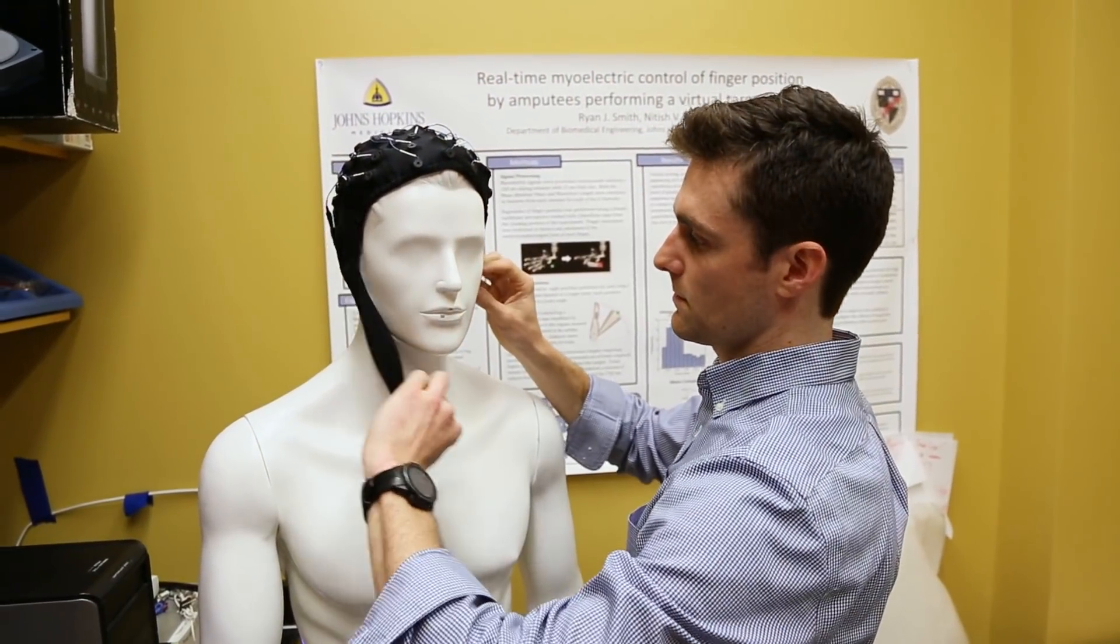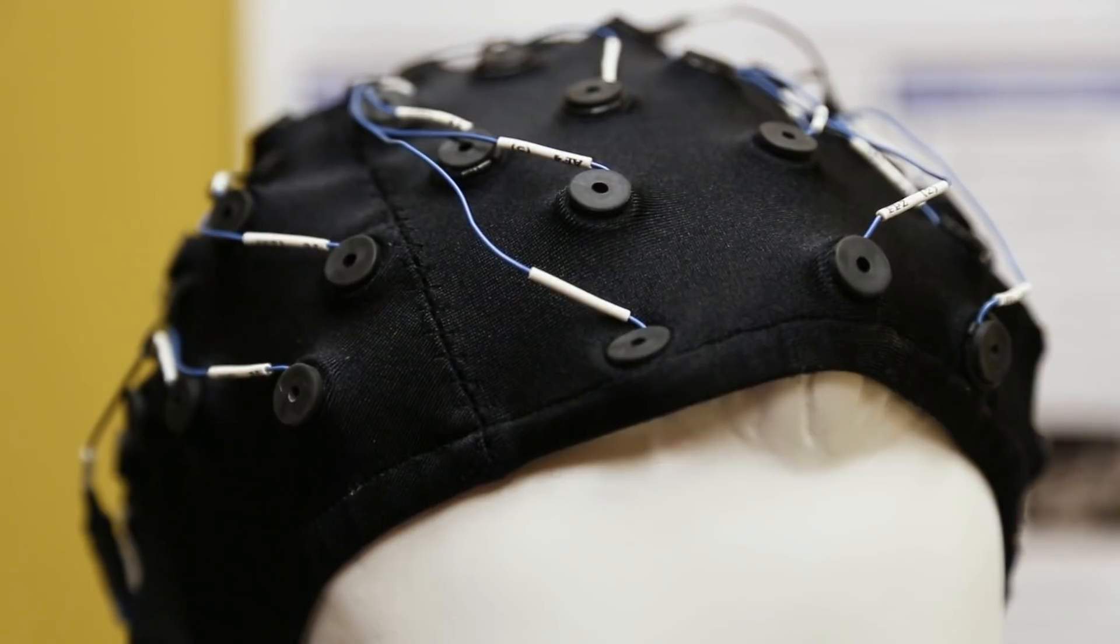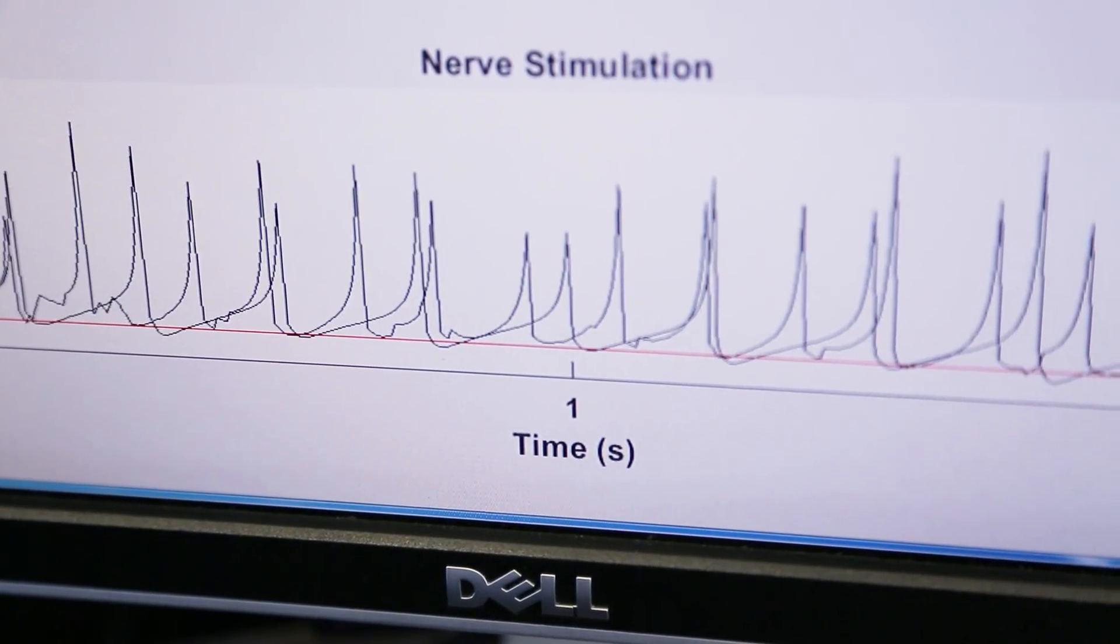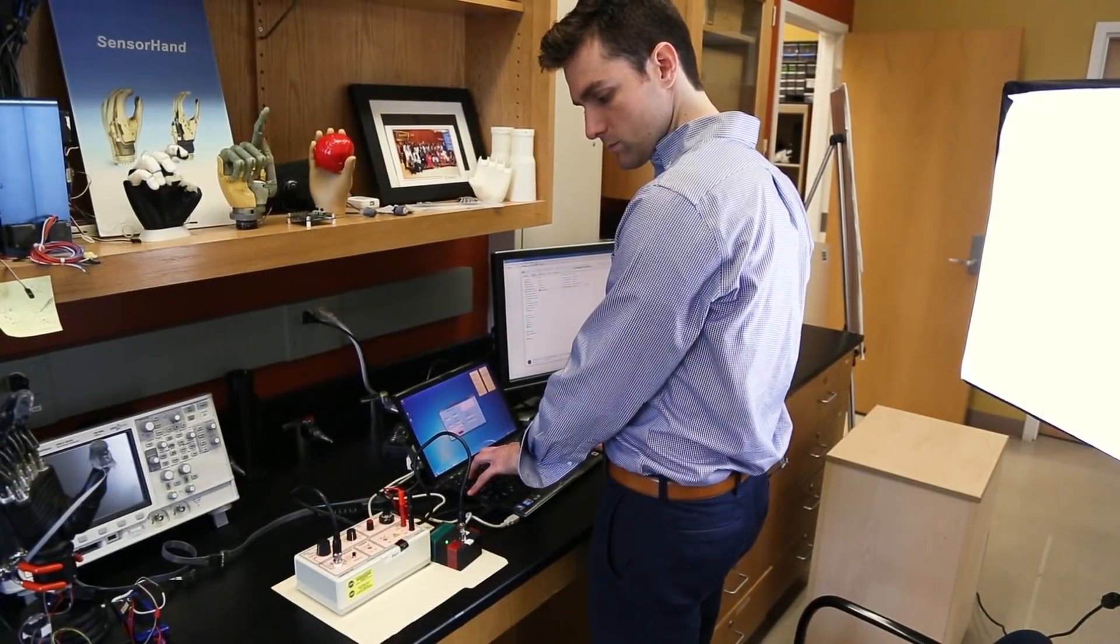With the sensory feedback, we can provide natural sensations to the phantom hand of an amputee, and this is really important because it's taking one more step closer to having a lifelike upper limb prosthesis.